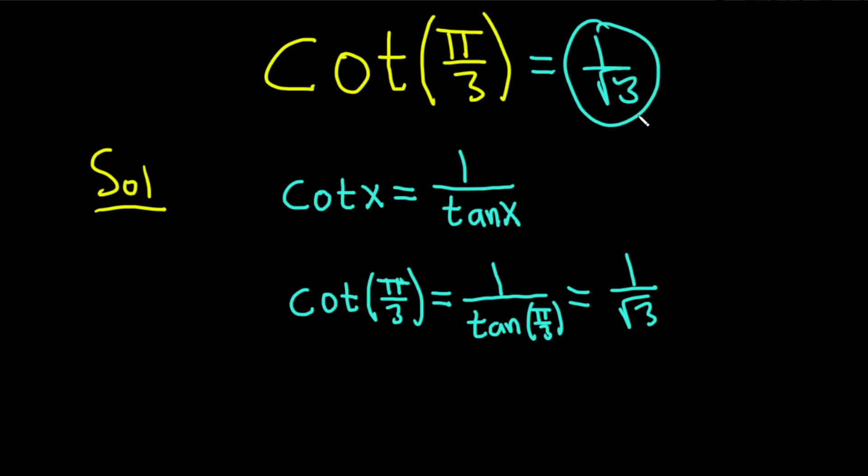You could leave it like this or you could rationalize it. If you wanted to rationalize it, you would take 1 over root 3 and you would multiply by the root 3 over root 3, which is basically multiplying by 1. And then 1 times the square root of 3 is the square root of 3. The square root of 3 times the square root of 3 is 3. So another answer that would be equivalent and correct would be this one.